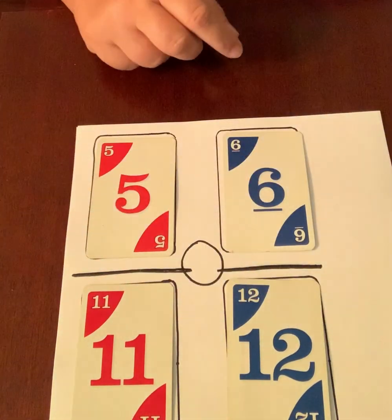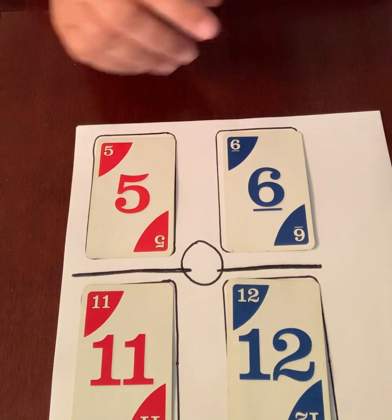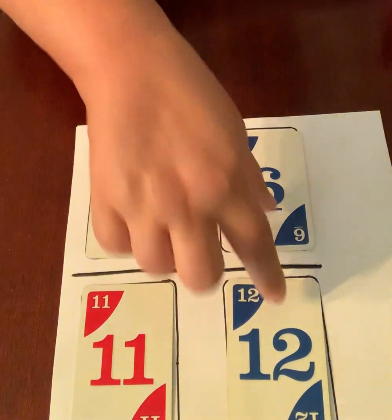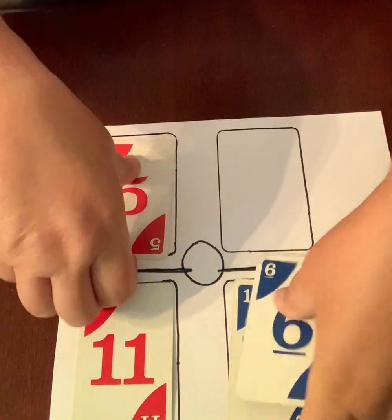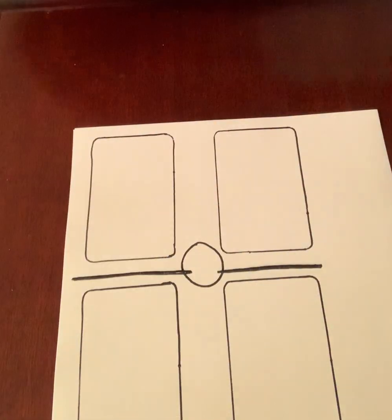And what's half of twelve? Six. And he's got six twelfths. So he has exactly one half. So this fraction is slightly bigger than this fraction. So in that round, he won those cards.